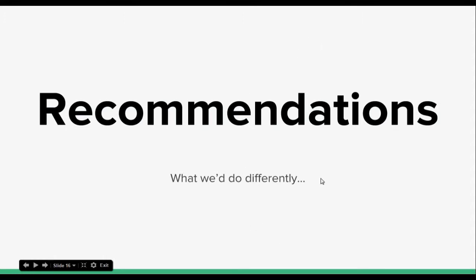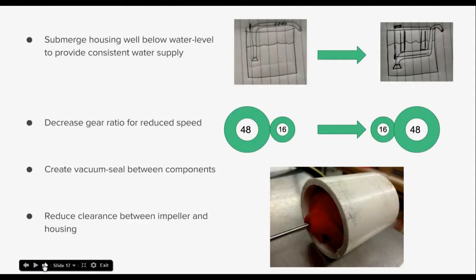So here are our recommendations for what we would do differently if we had more time to work on this pump or if we were going to do it all over again. First and probably most obvious, we would submerge the housing well below the water level to provide consistent water supply. Secondly, we would decrease the gear ratio for reduced speed and hopefully more torque. And we would probably first try going from our current configuration, which is 48 tooth gear to 16 tooth gear, and probably just switching those so we had the opposite gear ratio and we actually were gearing up. Or perhaps actually before that we could try just maintaining the same gear ratio throughout, so just maybe 48 to 48.